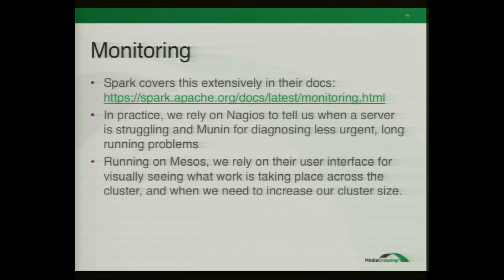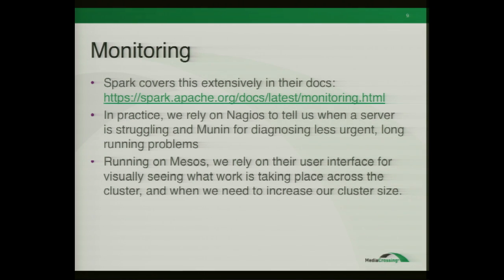Monitoring — Spark covers this extensively in their own documentation. In practice, we use Nagios the most. It's old school, but it works — it tells us when something broke. We use Munin for diagnosing longer-running problems, like when it's time to expand our cluster because we're spinning the CPUs too much. When running Mesos, you use the Mesos UI rather than the Spark UI, and it's actually pretty useful — I can quickly find out when it's time to add more nodes.